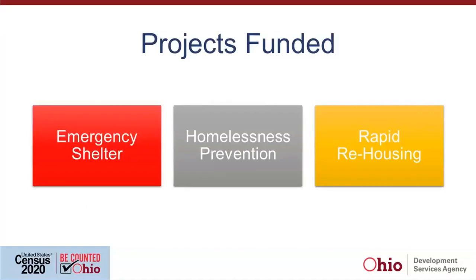So we have the typical programs that we fund through the Homelessness Crisis Response Program. We'll be funding emergency shelters, homelessness prevention, and rapid rehousing. One of the differences this year with the CARES Act is that homeless prevention dollars can target folks with 50% of area median income and less. If you're going to serve people at 50% or less, your HMIS system will have to create a separate program to track those folks separate from your standard Homeless Prevention Program, because they have different income and eligibility requirements. That's something you can work out with your HMIS administrator.